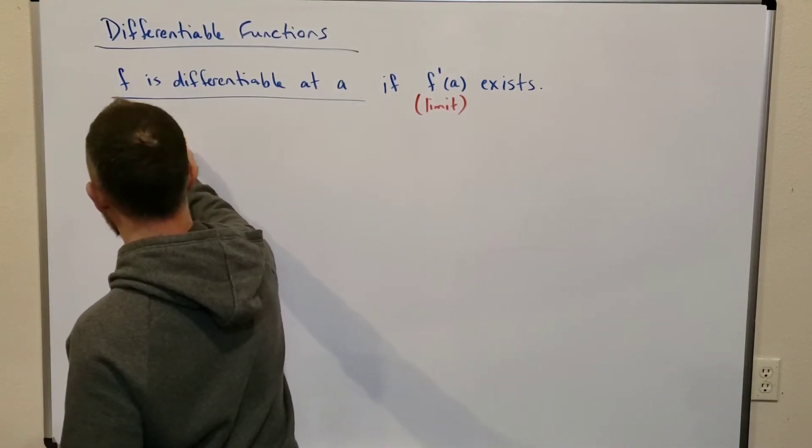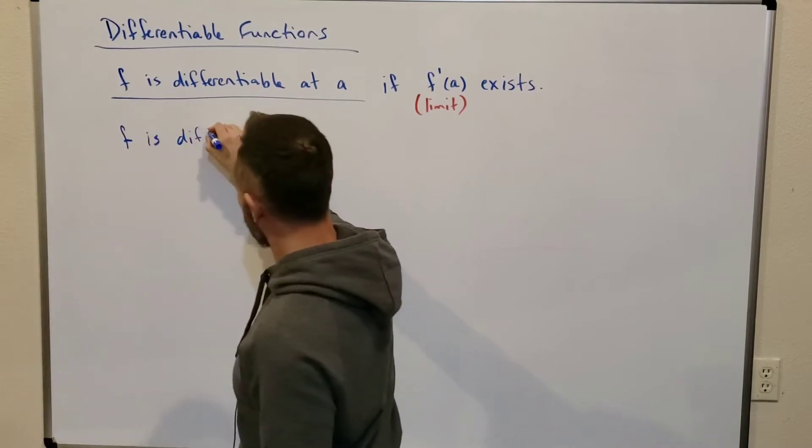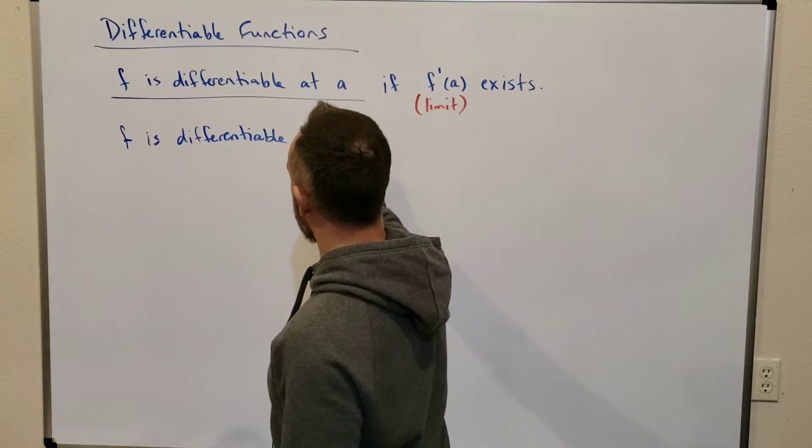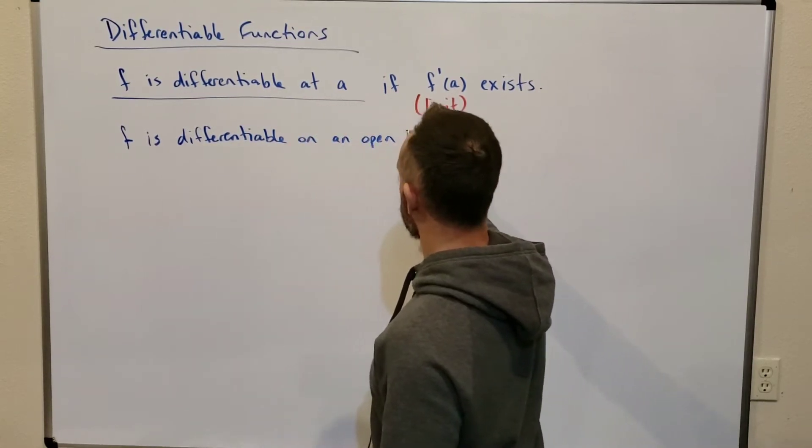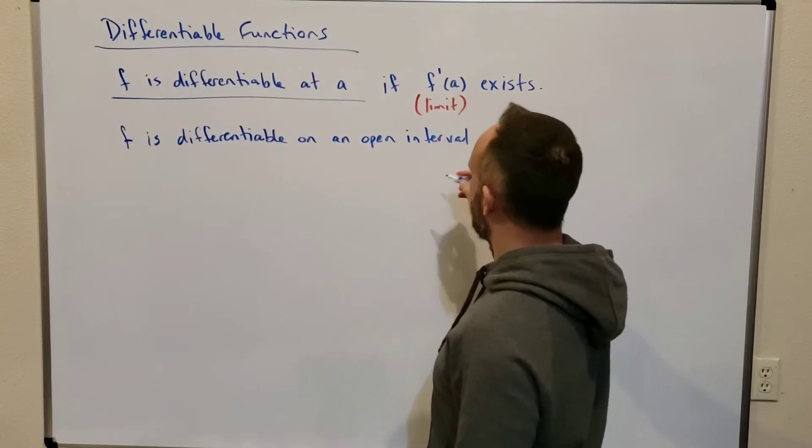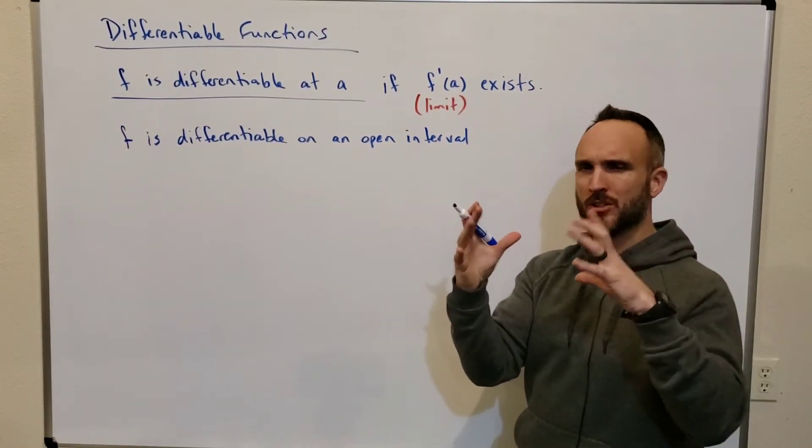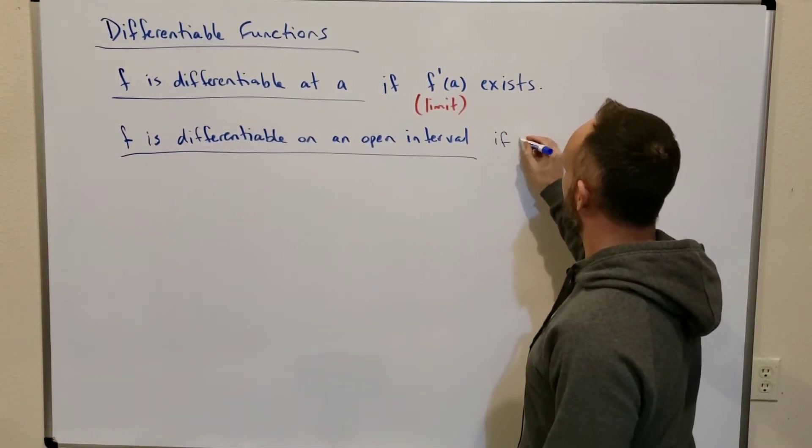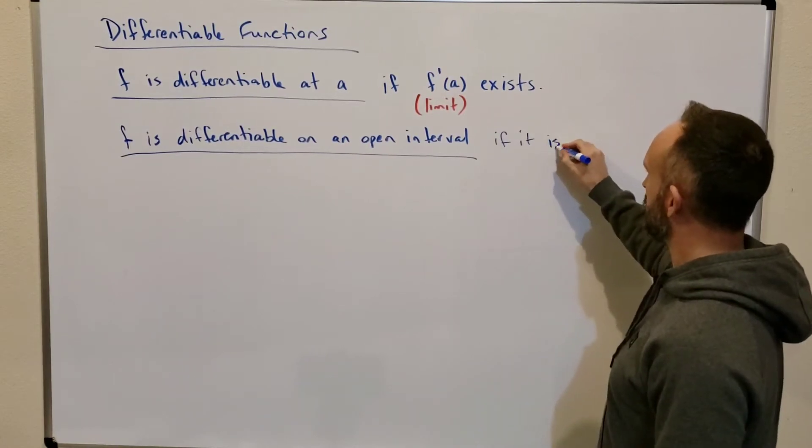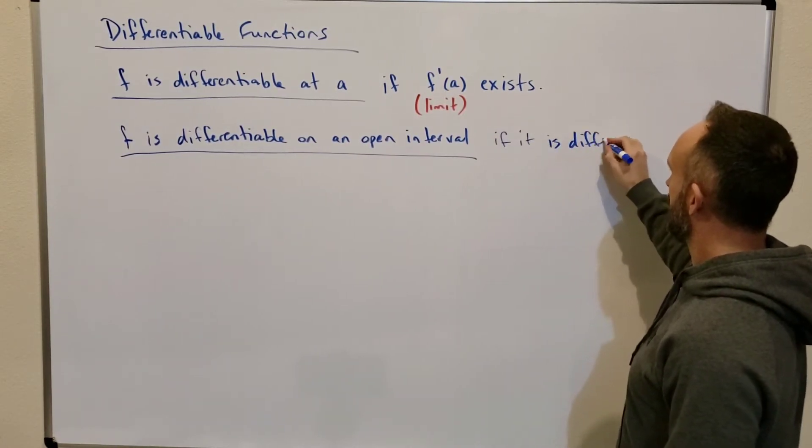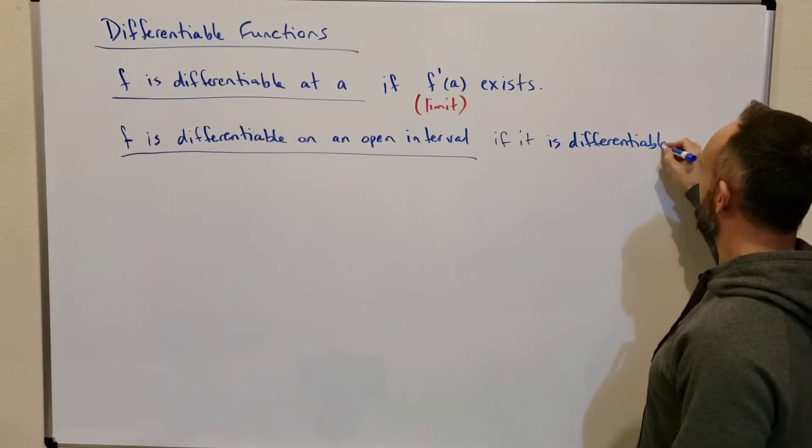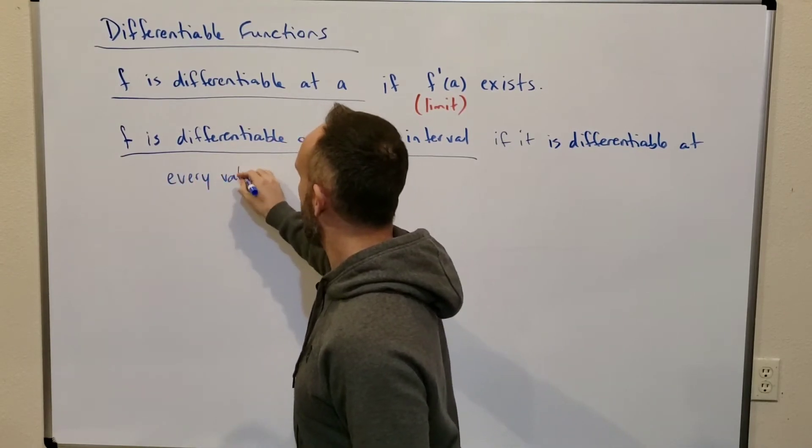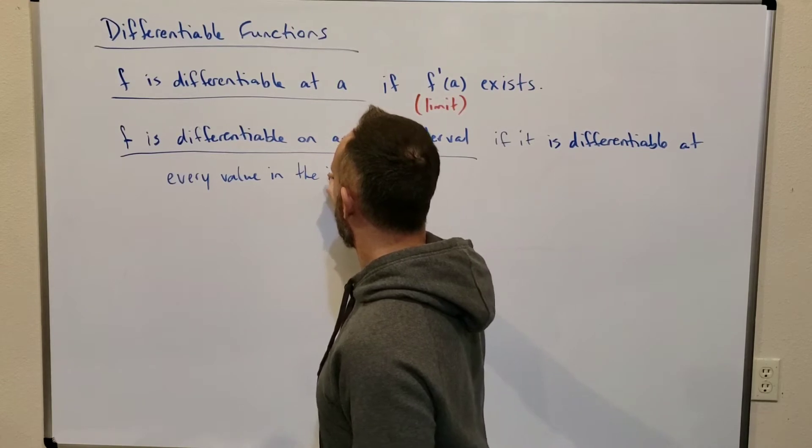Let's say what it means to describe f as differentiable. f is differentiable on an open interval. So an open interval is one with parentheses on each end. You don't include the endpoints. So we say if f is differentiable on an open interval, you could probably guess it.